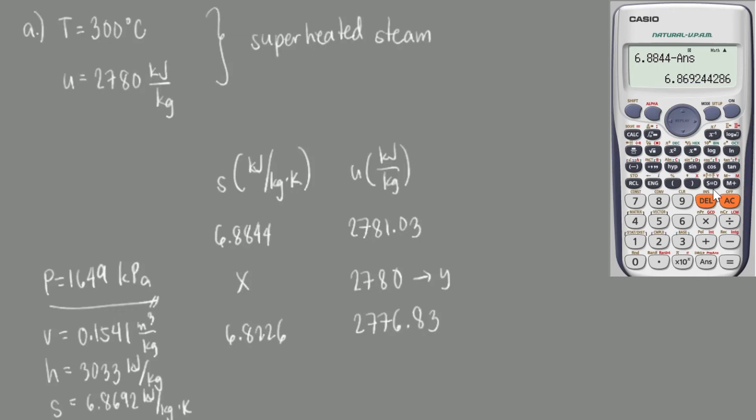And that is how we use interpolation to complete the physical properties of a specified state. All of these values came from the steam table, and we only needed the values of two independent properties to start. Let's take a look at Letter B.